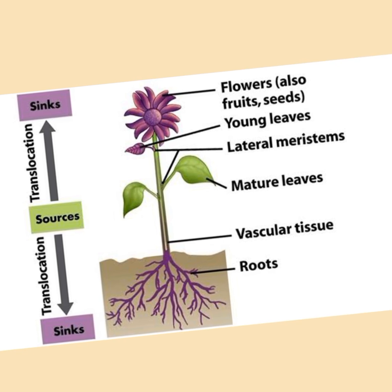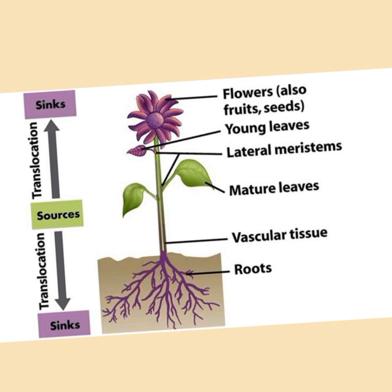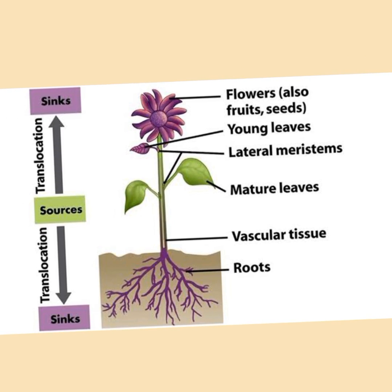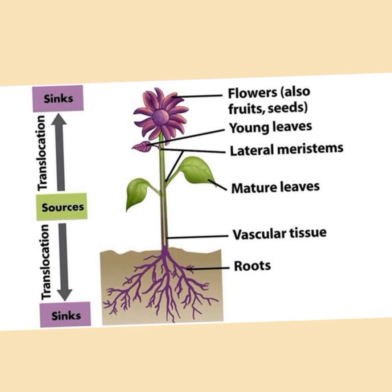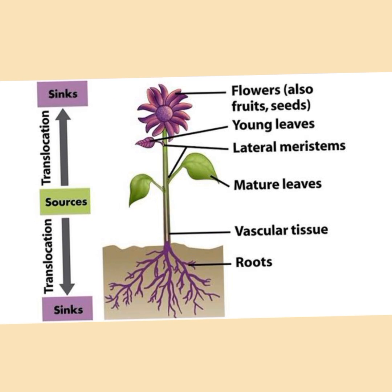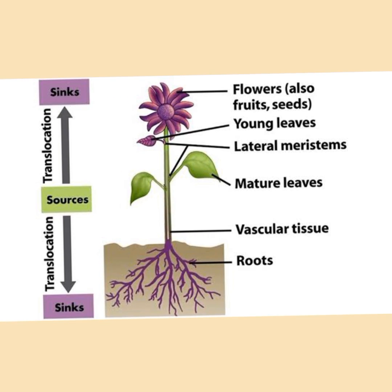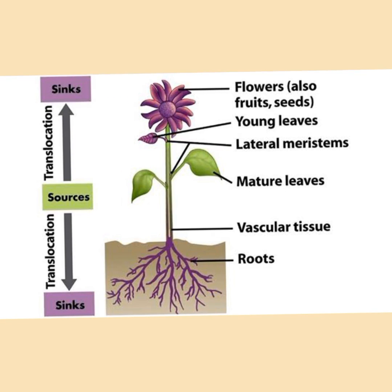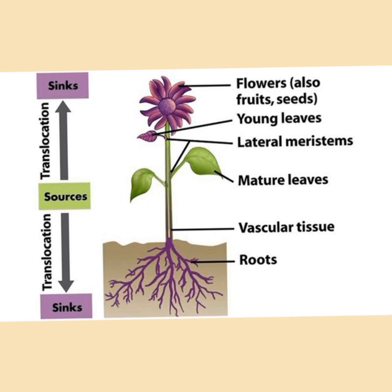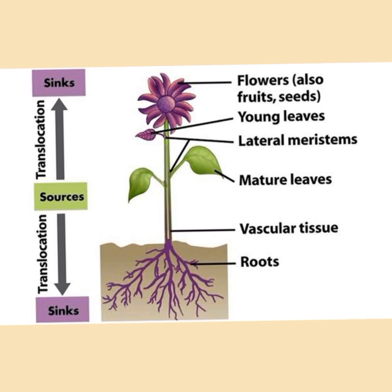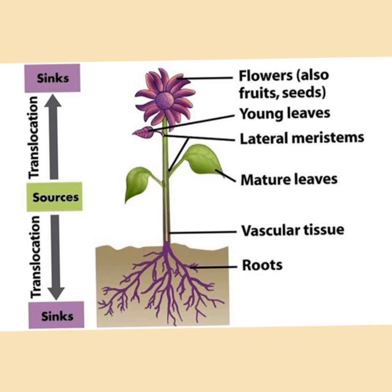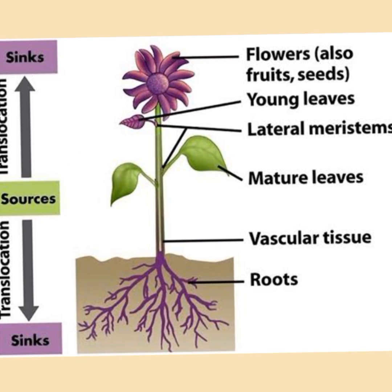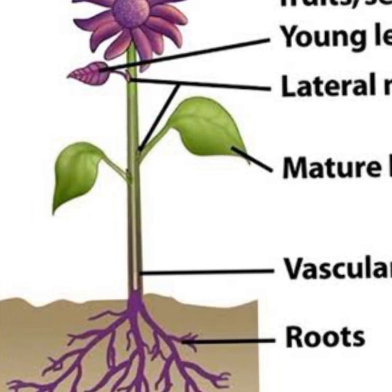Source is the site where organic food molecules like sucrose and amino acids are synthesized, whereas sink are those organs where photosynthesis does not occur and they only utilize the prepared food materials.